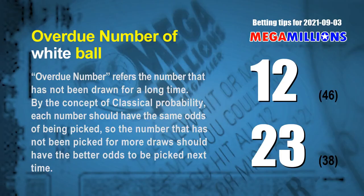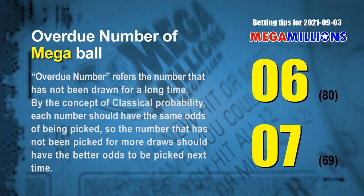Overdue numbers refer to numbers that have not been drawn for a long time. By classical probability, a number not picked for more draws should have better odds to be picked next time. The two most overdue white balls are 12 (not drawn for 46 draws) and 23 (not drawn for 38 draws). The two most overdue Mega Balls are 06 (not drawn for 80 draws) and 07 (not drawn for 69 draws).